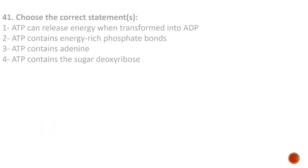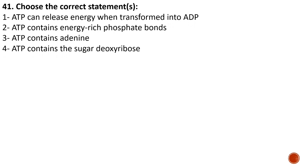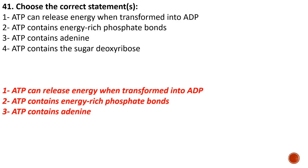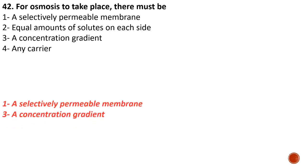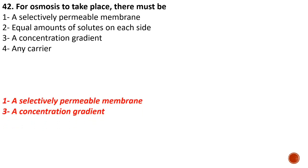Question forty-one: correct statements about ATP — one) ATP can release energy when transformed into ADP — correct; two) ATP contains energy-rich phosphate bonds — correct; three) hydrolysis of these energy-rich phosphate bonds releases energy — correct; four) ATP contains the sugar deoxyribose — false. Options one, two, and three are correct, giving answer A. Question forty-two: for osmosis to take place there must be — one) a selectively permeable membrane — correct; two) equal amounts of solutes on each side — false; three) a concentration gradient — correct; four) a carrier — false. Osmosis is the movement of water molecules from higher to lower potential across a selectively permeable membrane, so the answers are one and three.